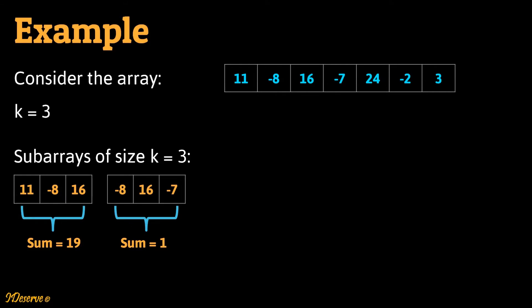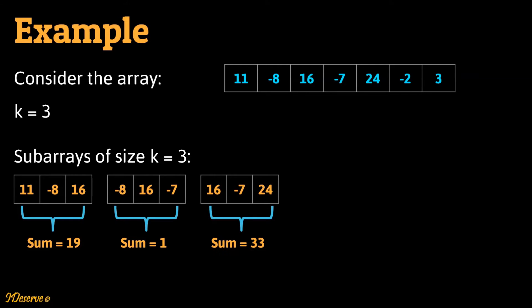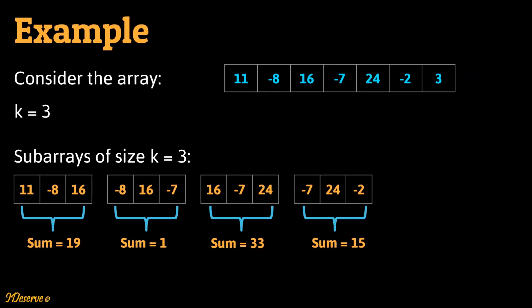The next subarray of size 3 starts from index 1 to 3 and has elements -8, 16, and -7, and the sum is 1. Similarly, the next subarray of size 3 starts from index 2 to 4 and has elements 16, -7, and 24, and the sum is 33. The next subarray of size 3 contains elements -7, 24, and -2, and the sum is 15.